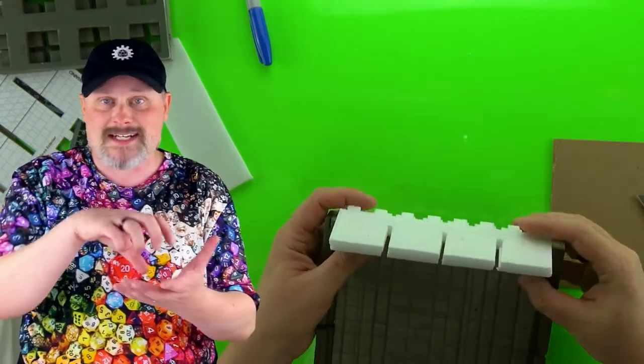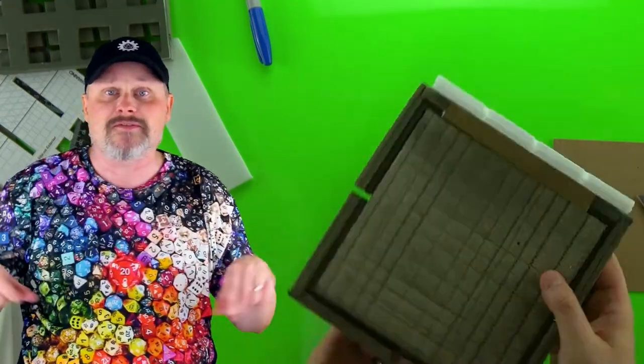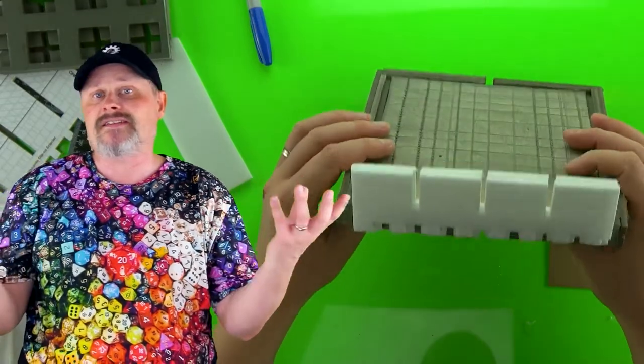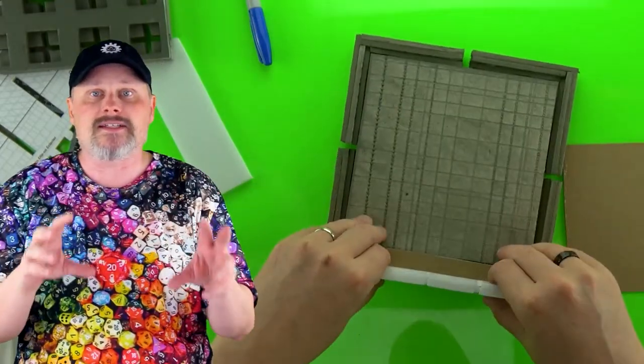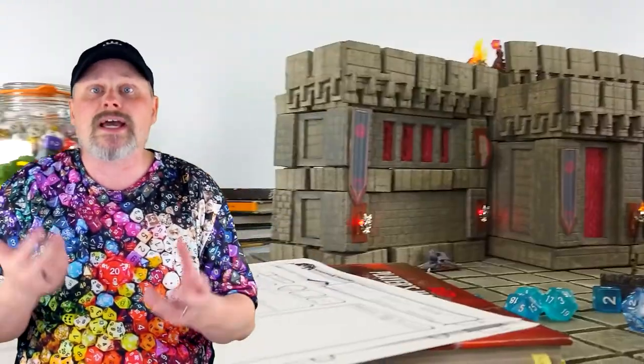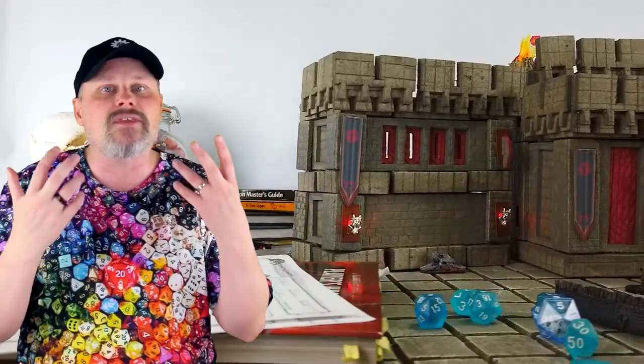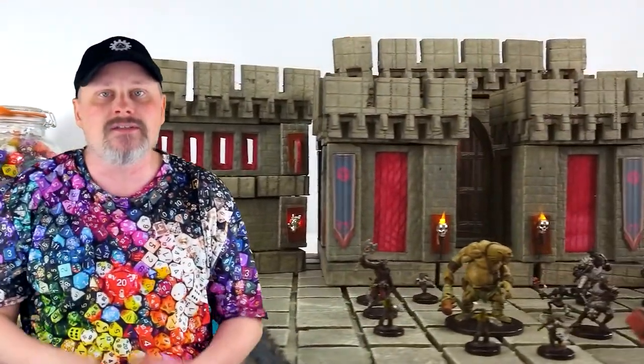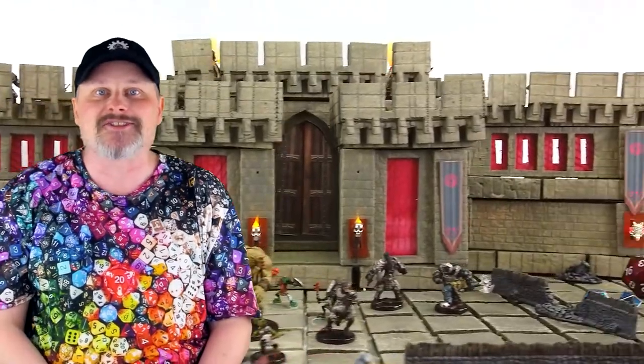Clip-ons are items that clip onto the borders of grid tiles. This can be things like crenellations, which we're going to be making in this video, or like a railing or a half-height wall. Basically anything you want to have attached to the border of a grid tile, you can make with clip-ons. So let's get started.